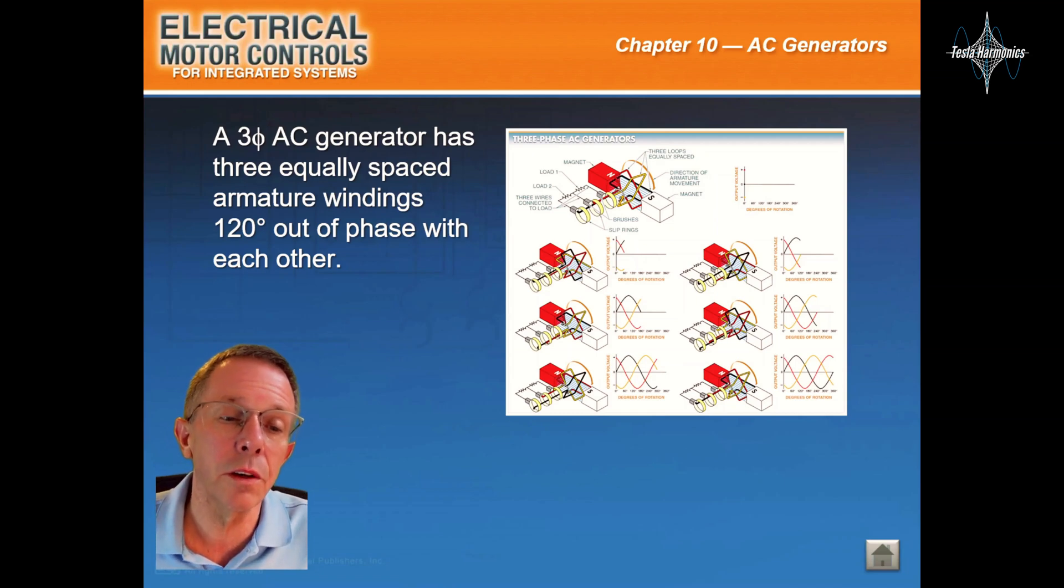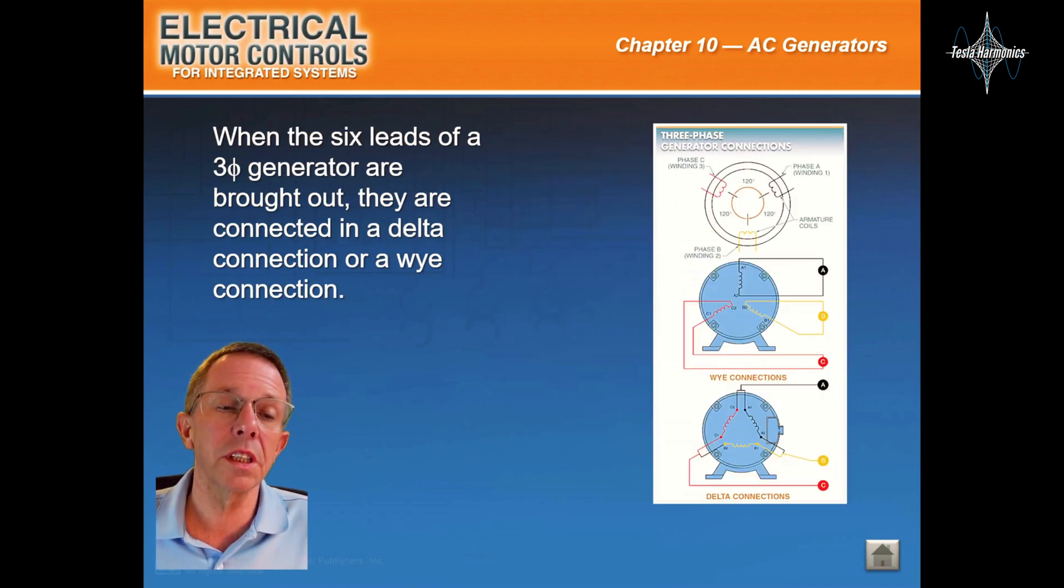A three-phase AC generator has three equally spaced armature windings, 120 degrees out of phase with each other. When the six leads of a three-phase generator are brought together, they are connected in a delta connection or a Y connection.